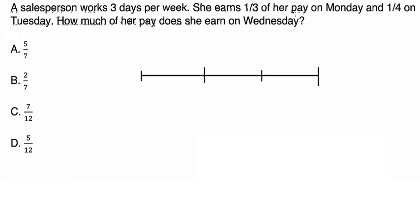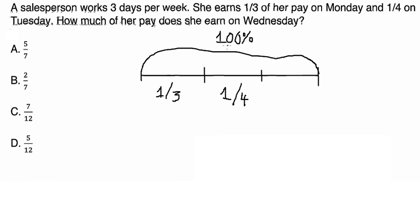On Monday she got about one over three. On Tuesday that is about one over four. We know that the total of this one is about 100 percent. 100 percent, that is about number one.